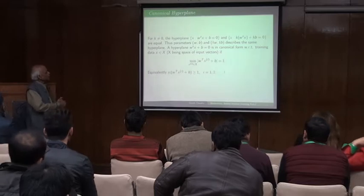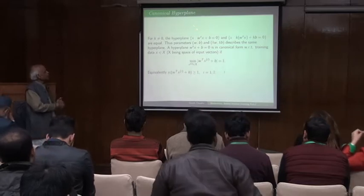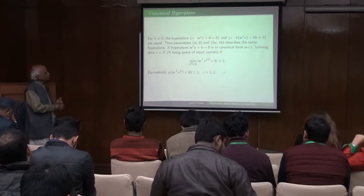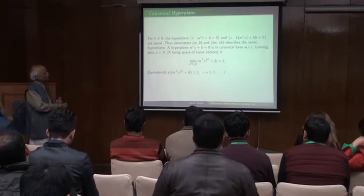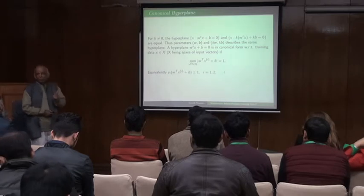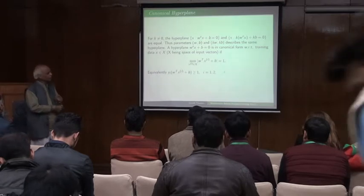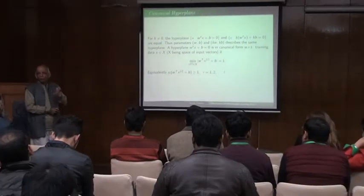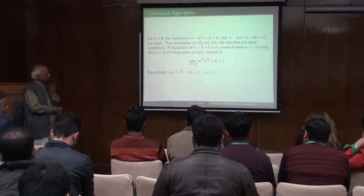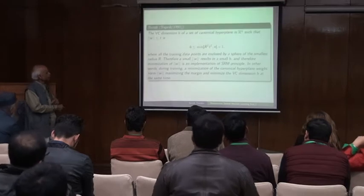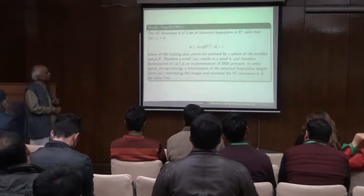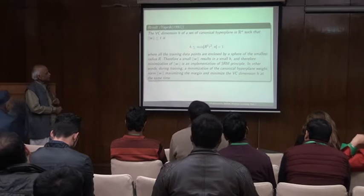We can always take the classifiers which are in the canonical form. Why the canonical form? Simply because the same classifiers can be represented in many ways. The same classifier, same double t, same double t classifier can be computed in hundreds of ways, so we bring it to only one level to define things. That means we bring it to canonical form — the classifiers for which the minimum functional value at the support points is more than or equal to 1. If you do this, then this is the VC dimension which I want to minimize.